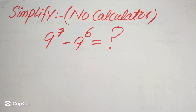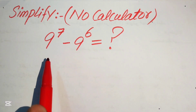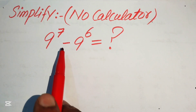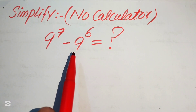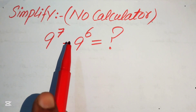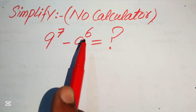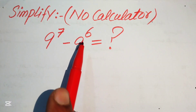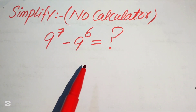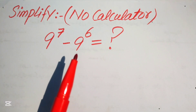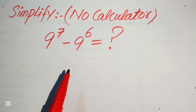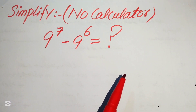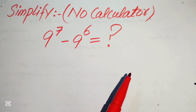Hello everyone. How to simplify this nice algebraic expression: 9 to the power of 7 minus 9 to the power of 6. In this problem we cannot use a calculator, so I will do all of the working on this page.